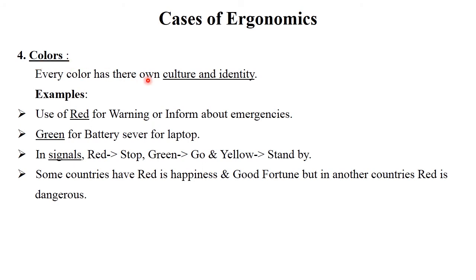The last case of ergonomics is color. Every color has its own culture and identity. For example, red indicates warning or emergency; green indicates battery saver for a laptop. In traffic signals, red means stop, green means go, and yellow means standby. In some countries red means happiness and good fortune, while in others red means danger. Colors affect human behavior depending on cultural identity and context. These are all the cases of ergonomics.